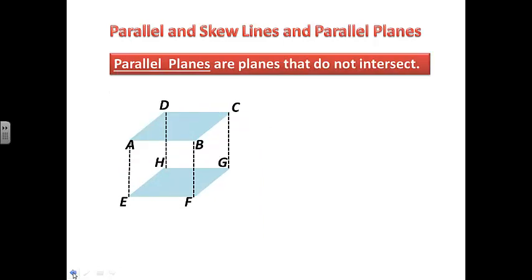Parallel planes are planes that do not intersect. So the top plane in blue, plane ABCD, is parallel to the bottom plane in blue, plane EFGH.